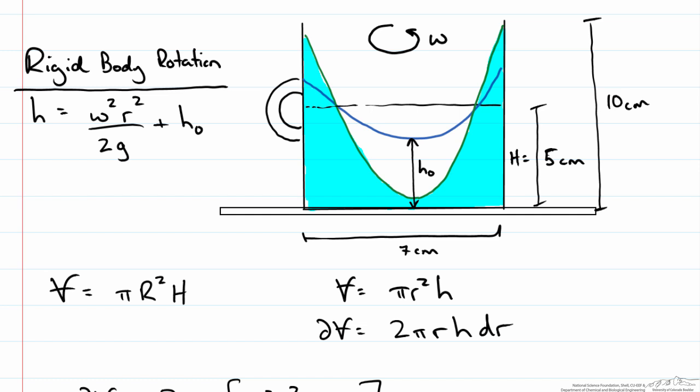...that means the edges of our free surface at the outer radius of our mug will be at the top of the mug. So this will give us our rotational speed that we could achieve without losing any water. Any higher speeds would end up causing that H₀ to actually be negative to drop below the surface of the bottom of the mug.